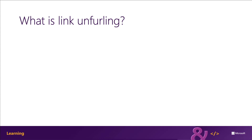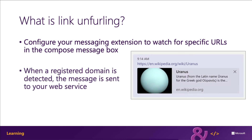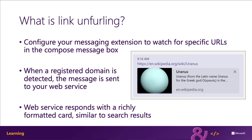With link unfurling, your app can register and receive an invoke activity when URLs of a particular domain are pasted into the compose message area. The invoke will contain the full URL pasted into the compose message area, and you can respond with a card the user can unfurl providing additional information or actions. This works similarly to a search command, with the URL serving as the search term.